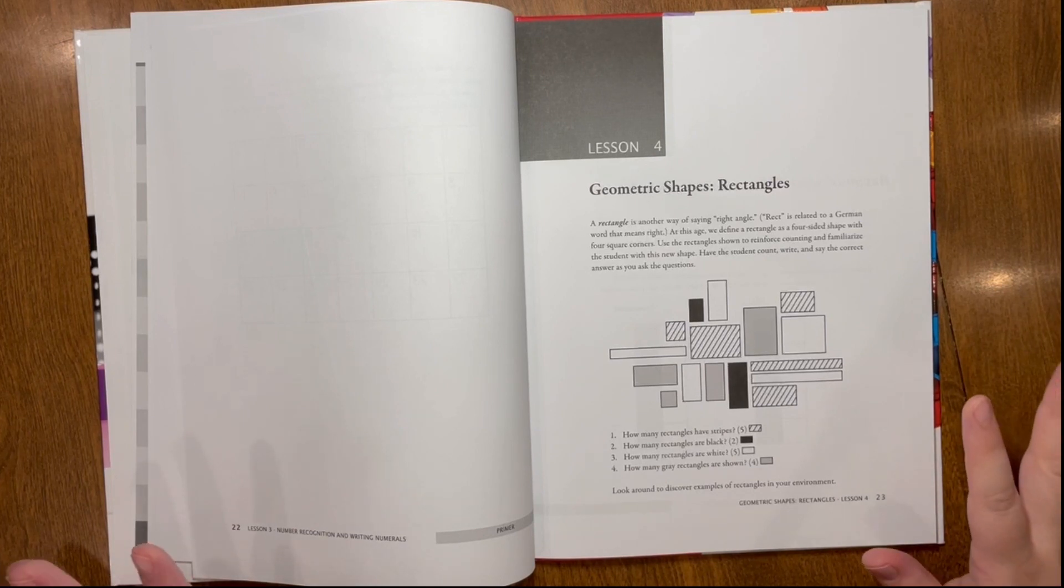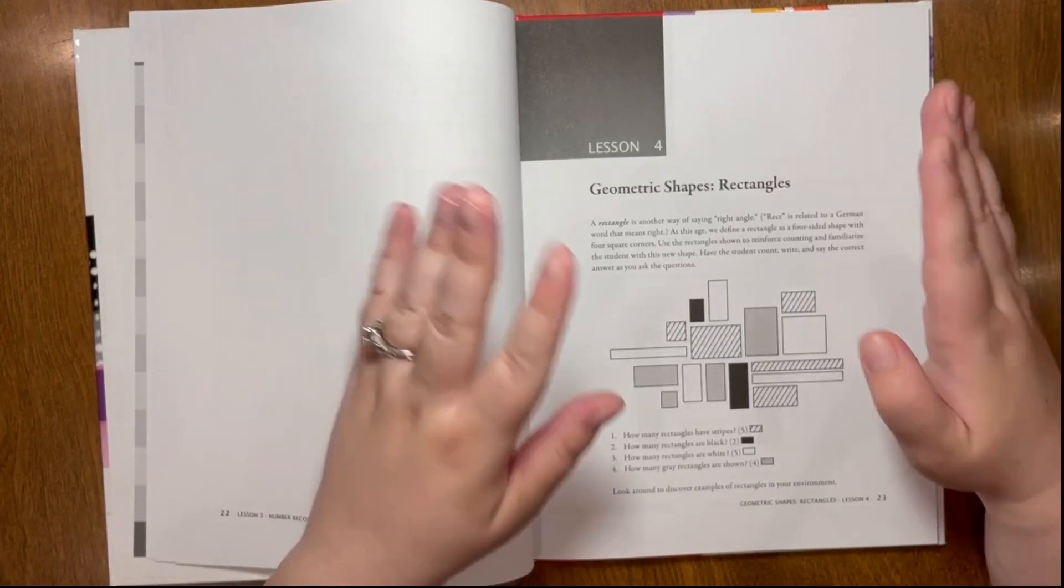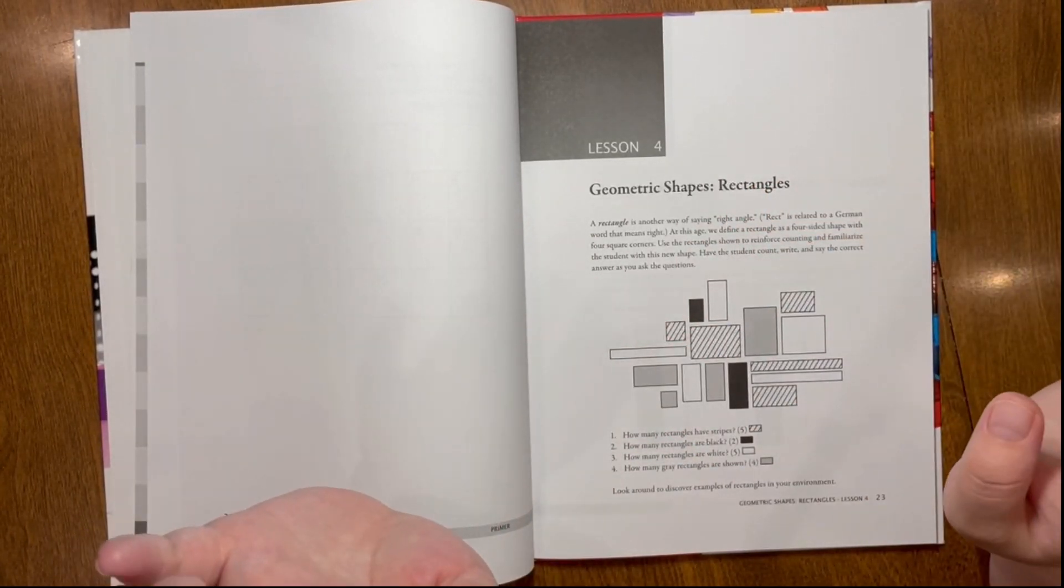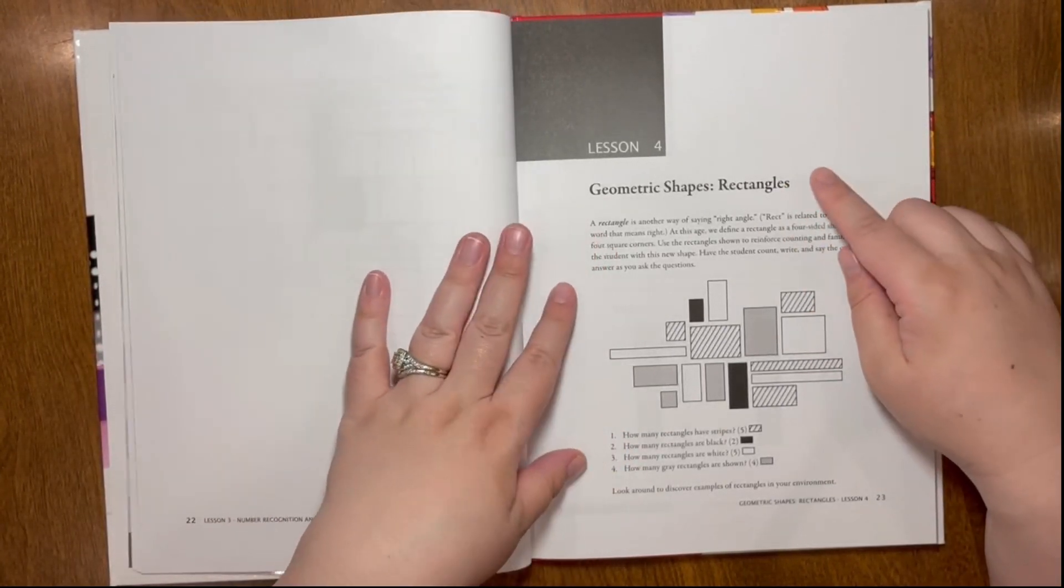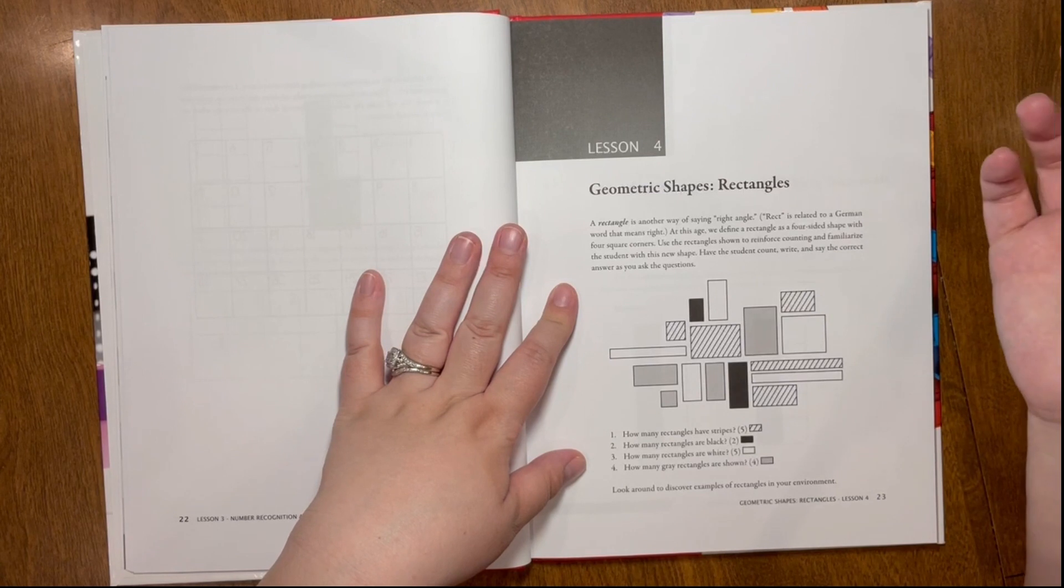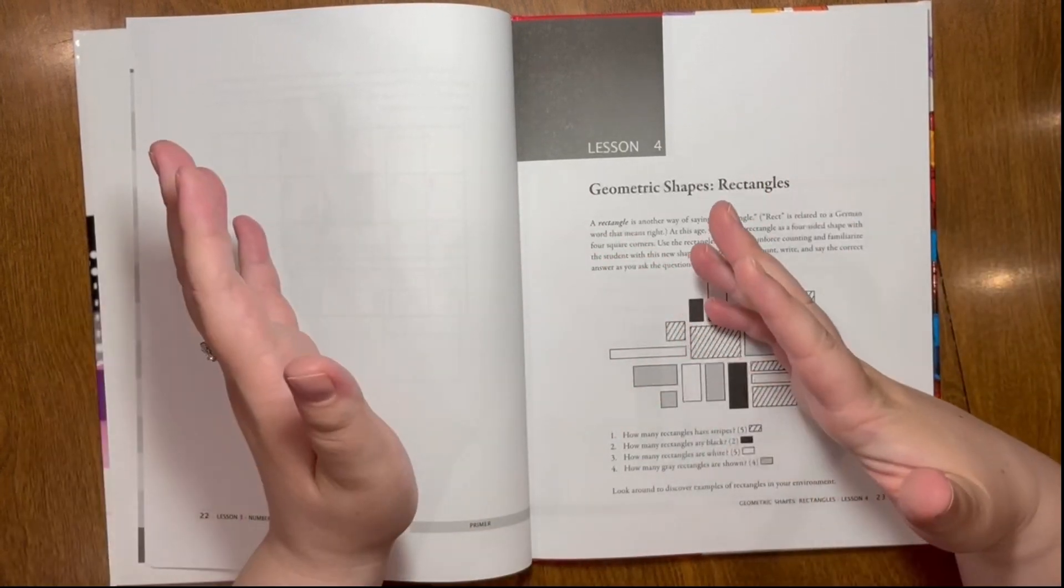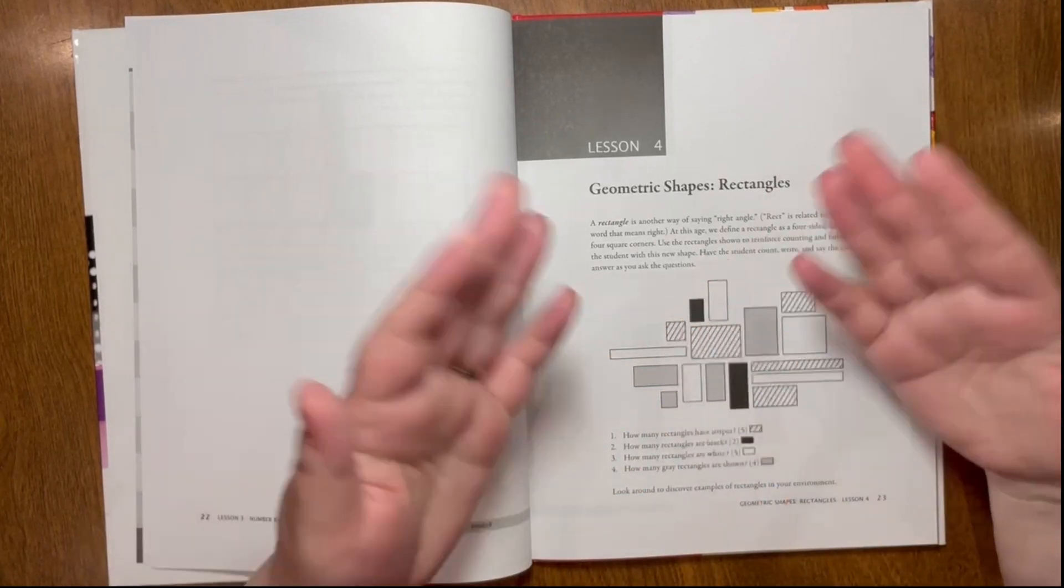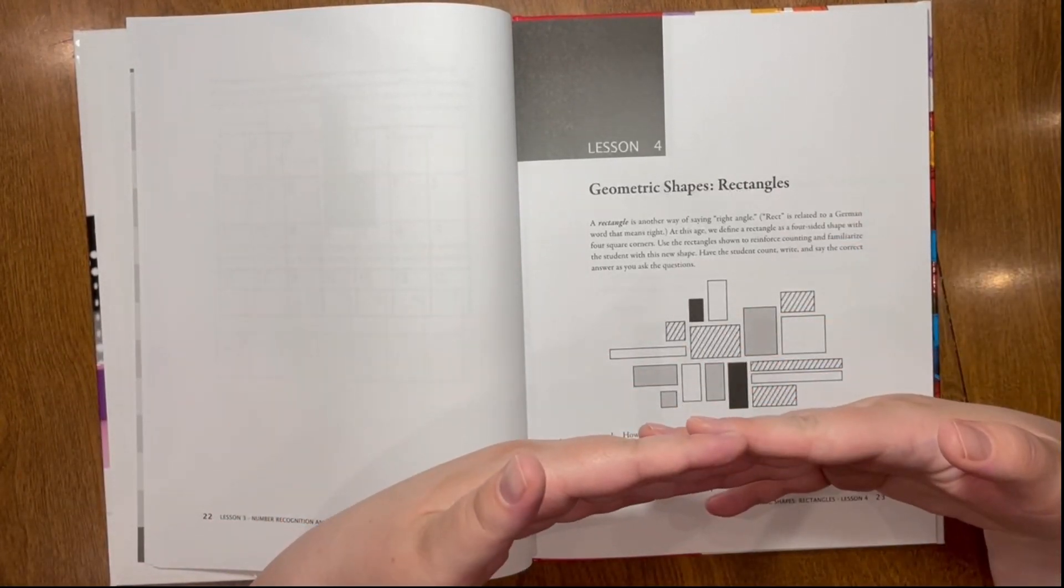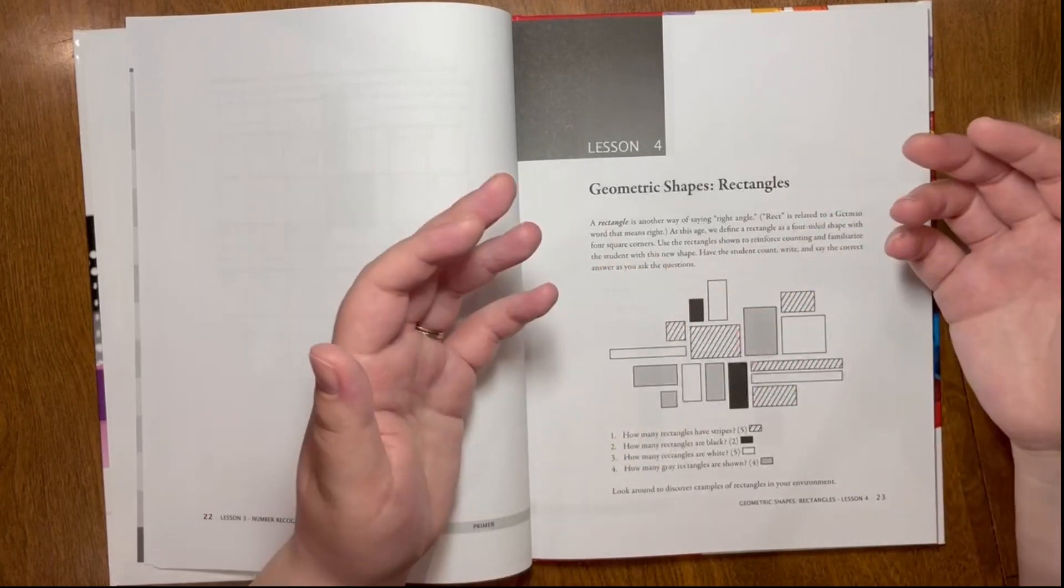For example, when we get to lesson three, an additional tip that they give is to say that you should be now adding in a calendar piece to your day, and that by doing that, you can practice this idea of shading in a certain amount of numbers within a whole. If you were not to get the teacher guide, you might miss out on little tips like this that it gives you for what you should be doing in addition to the practice that comes with it. Let's go ahead and look at lesson four, the geometric shapes rectangles. For each lesson, there is a video component that you can have, as well as seven worksheets that are front and back.